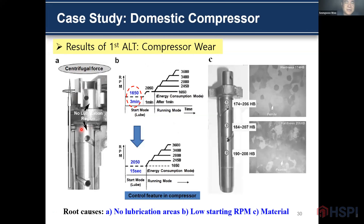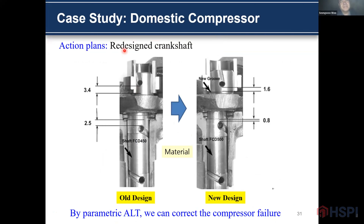We checked the design of the compressor and found three design problems: one is a low lubrication area, another is a low starting RPM, and the third is the crankshaft material. As an action plan, we redesigned the compressor, changing some dimensions, adding some oil groove, and changing the crankshaft material from FCD 450 to FCD 500. By parametric ALT, we can correct the compressor failure.